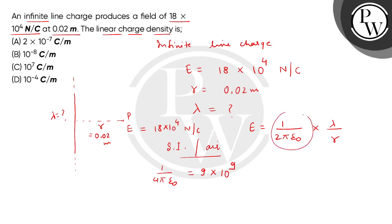Here we get this factor value: 18 multiplied by 10 to the power 4 equals 9 multiplied by 10 to the power 9 multiplied by lambda divided by 2 multiplied by 10 to the power minus 2. The correct answer is option number 8.